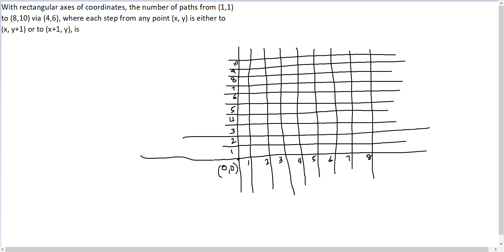You have to start from (1,1) - this will be your starting point. You have to go till (8,10), which is here, and you have to go via (4,6) - this is your intermediate point. Let's name these points as A, B, and C.